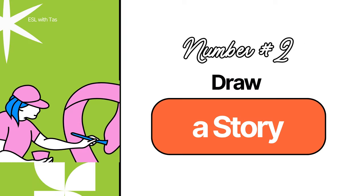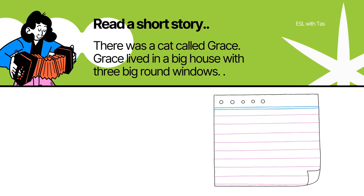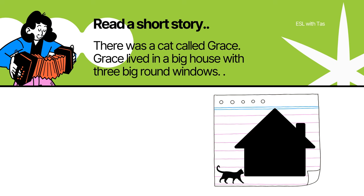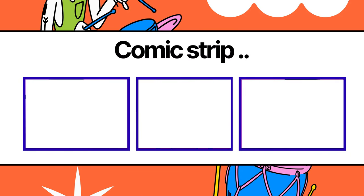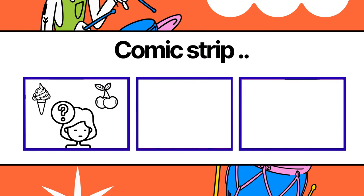Number two is draw a story. Read a short story or a description of scenery to your students and have them draw a picture based on their own interpretation. They can draw one big vertical or horizontal picture, or — and this is what I personally like to do — ask them to divide the page into multiple panels.